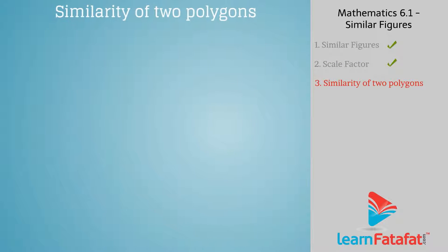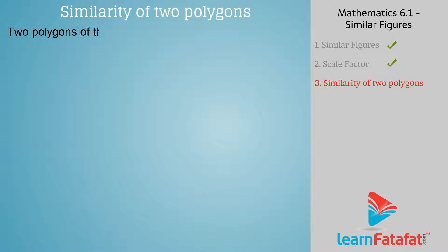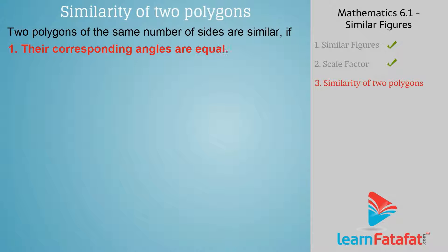Similarity of two polygons: two polygons of the same number of sides are similar if their corresponding angles are equal and their corresponding sides are in the same ratio.